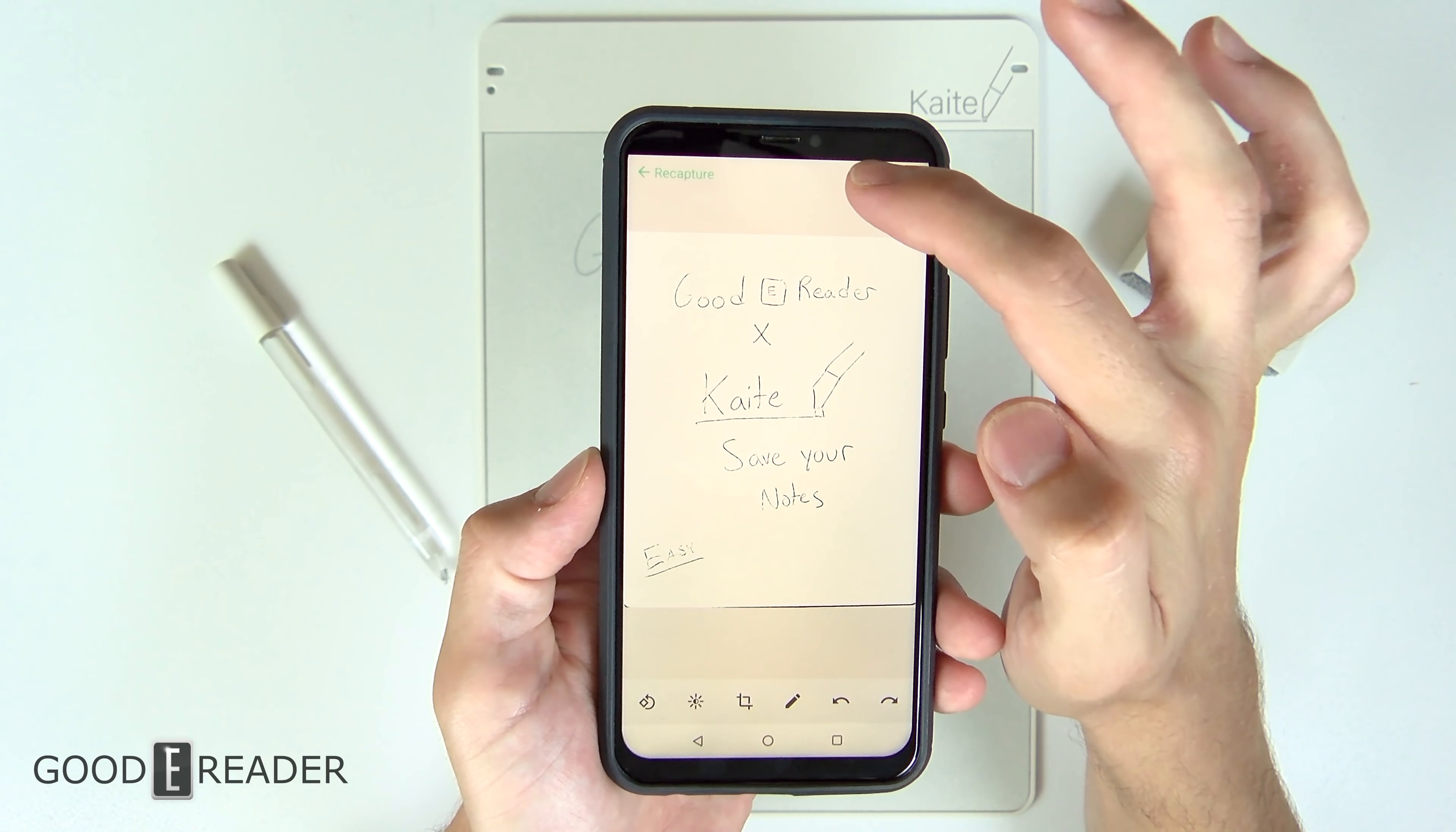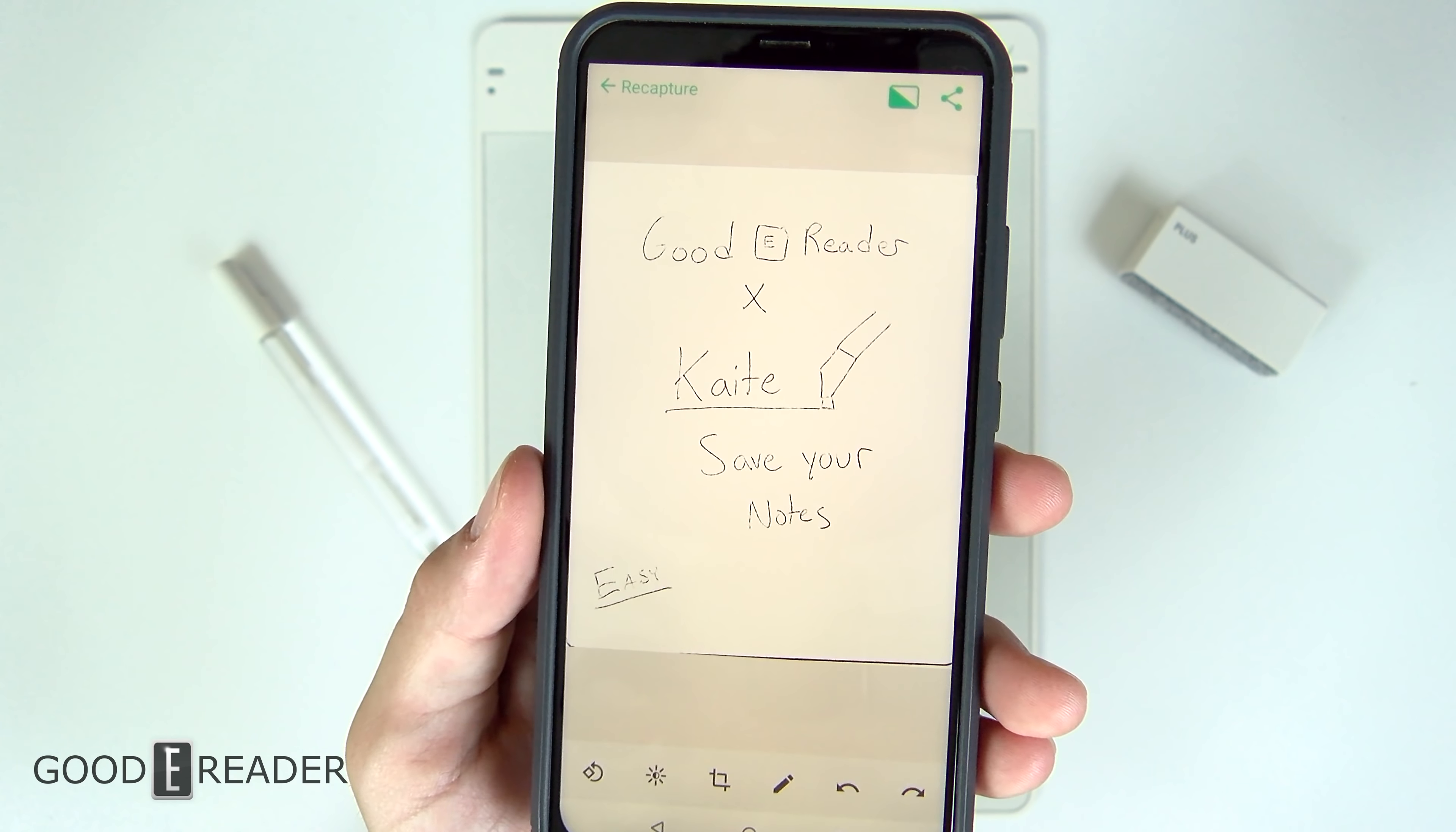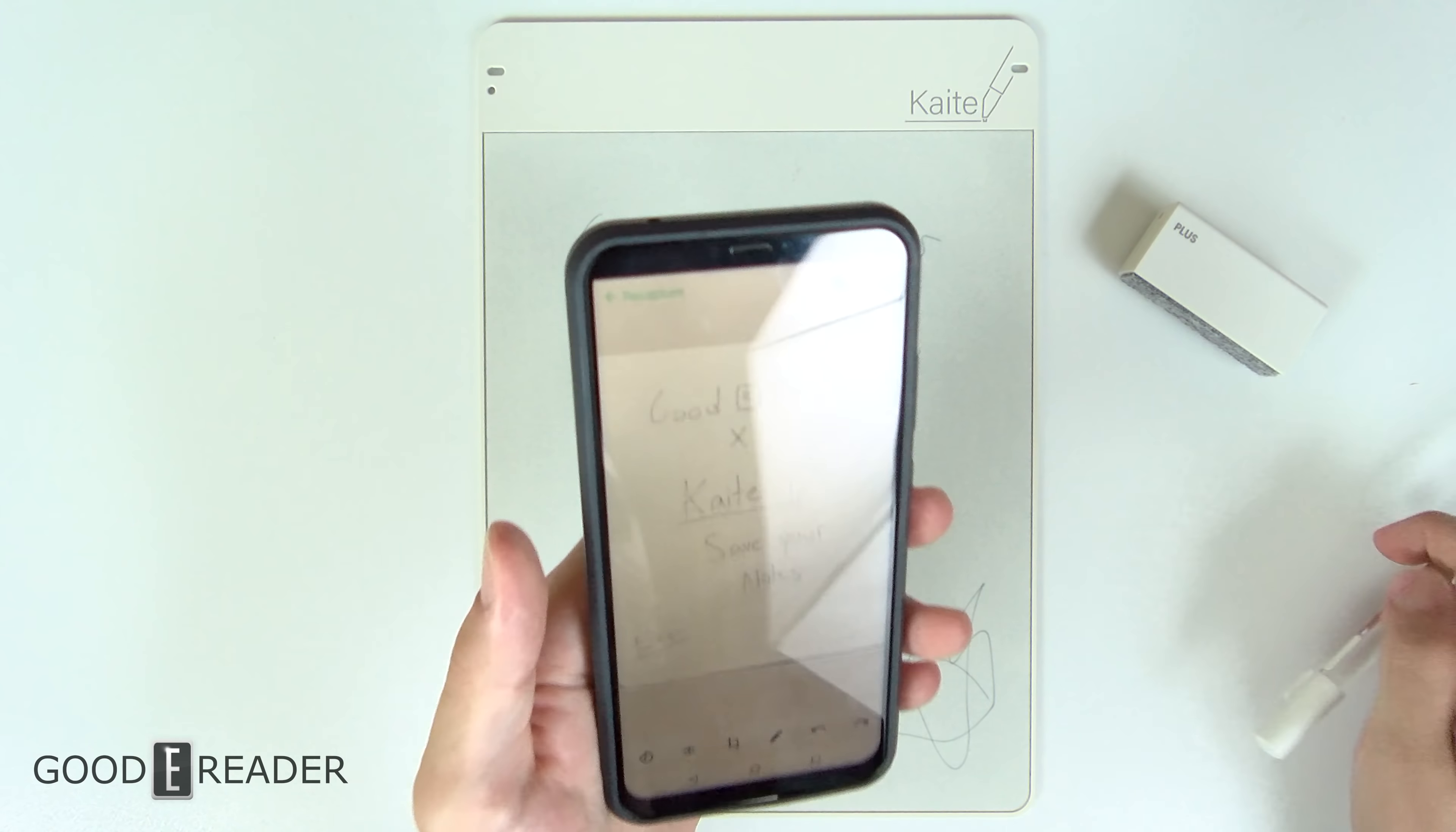Now it's not just a photo, although you can toggle between the photo itself, which doesn't look good, but the transcribed version is actually quite nice, and you can see there, Goodie Reader with Kaite, save your notes easy. It's precisely what I wrote on the screen. Anything you write on the screen, you'll be able to take a note and save it on your application.